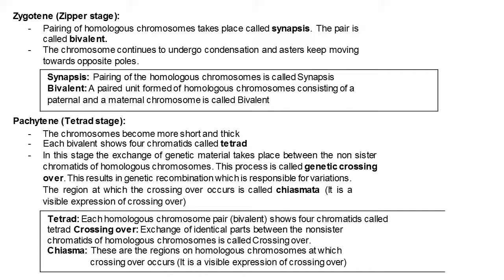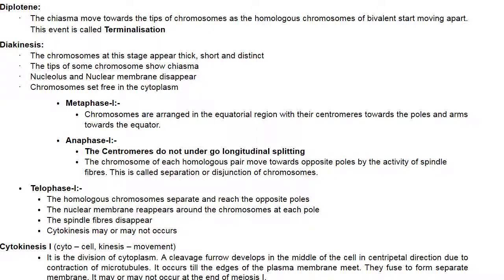Tetrad means each homologous chromosome pair or bivalent shows four chromatids. Crossing over means exchange of identical parts between non-sister chromatids of homologous chromosomes. Chiasmata is the region on homologous chromosomes at which crossing over occurs and is a visible expression of crossing over. The chiasmata move towards the tips of the chromosomes as the homologous chromosomes of the bivalent start moving apart — this is called terminalization or chiasmata terminalization.